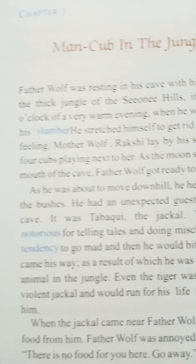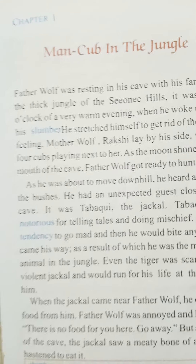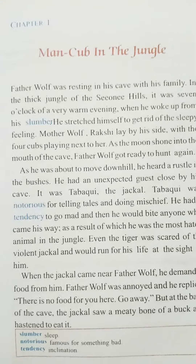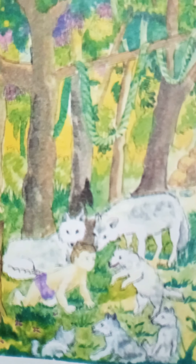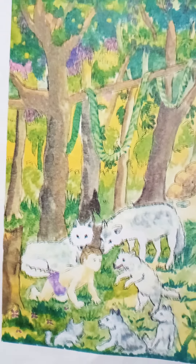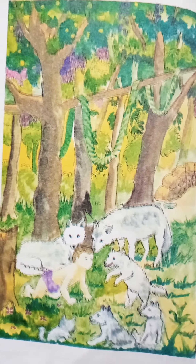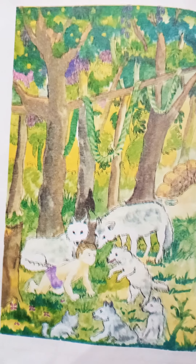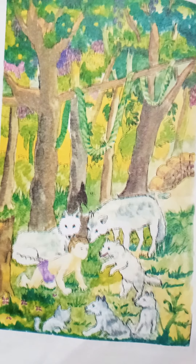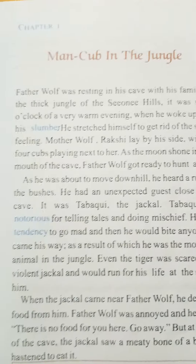Now open page number 5. This is Chapter 1: 'Man Cub in the Jungle' — meaning, a human child in the jungle. Here you can see a man cub — a small child is visible. All the animals are around him. This is a wolf family. The entire jungle is visible. A child is surrounded by a wolf family. Now start reading with me.